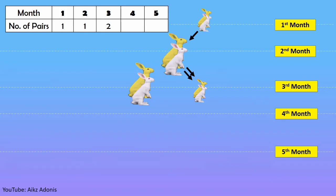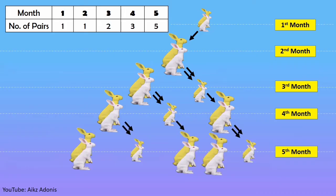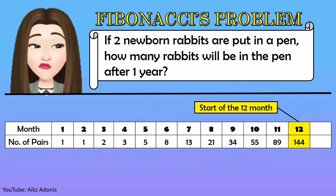In the fourth month, the old pair will produce another pair. The first set of offspring will be old enough to reproduce. So on the fifth month, we will have five pairs of rabbits. By using the Fibonacci sequence, we will have 144 pairs in the beginning of the 12th month.